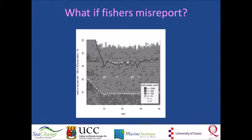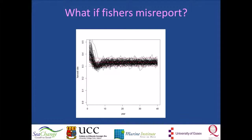Nevertheless, at the stock level, the RTI system succeeds in bringing the harvest rate — which is initially too high — to within the accepted bounds by adapting the stringency of the tariffs. Management of the stock is not jeopardized by misreporting. Note, however, that the tariffs become more stringent for everybody, for misreporting as well as for compliant fishers. Again, this result can be robustly replicated.